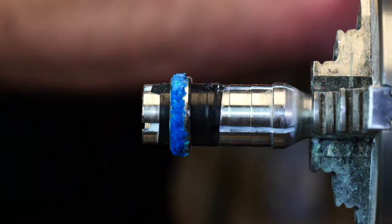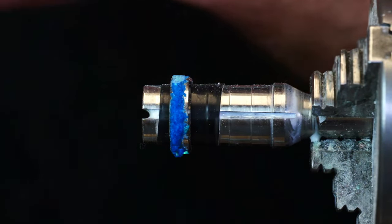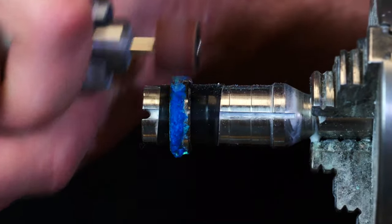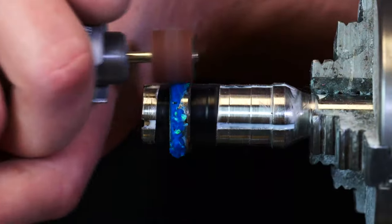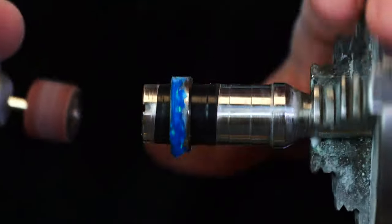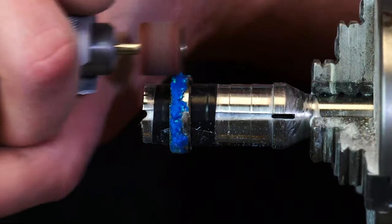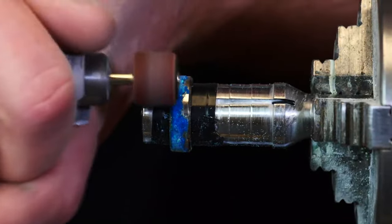After we've allowed that to cure, we're going to go ahead and just start dremeling everything down flush. Since there's a lot more exposed titanium, I'm switching to a 120 grit dremel bit instead of an 80 grit like I normally use. So, as I'm dremeling, I'm just making sure to be extra careful to not press too hard because you don't want to put in...